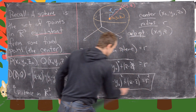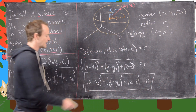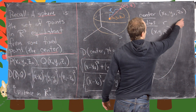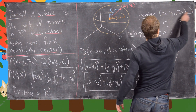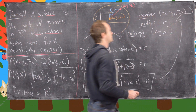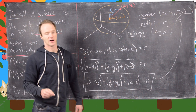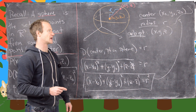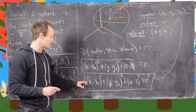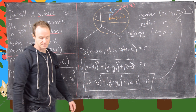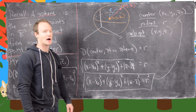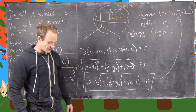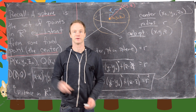That equals R squared, and this is the equation of a sphere. So if we have a sphere with center (x₀, y₀, z₀) and radius R, then it has this equation. I'm going to erase the board and then we'll look at a few examples.